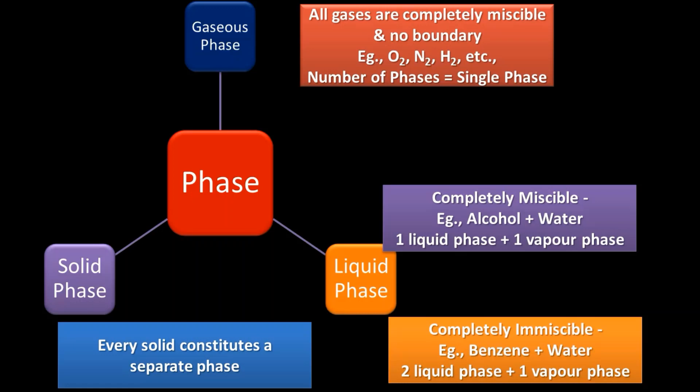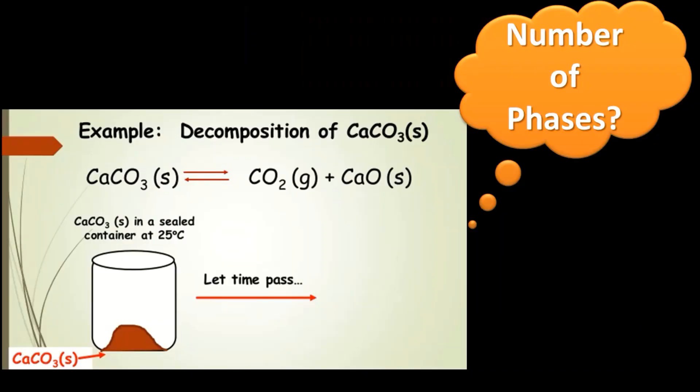Every solid constitutes a separate phase because each solid has a well-defined boundary, so we can differentiate and separate them very smoothly. This is how phase is described. Now we are going to identify the number of phases for some systems.